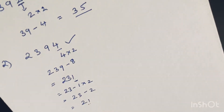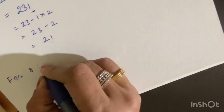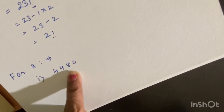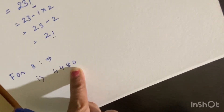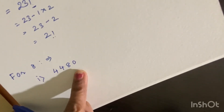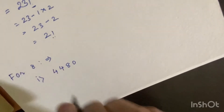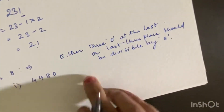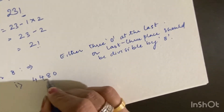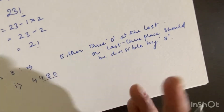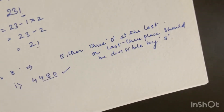Now let us move on to the divisibility test of 8. If you remember, 4 and 8 are quite similar. For 4, the last two digits must be divisible by 4 or be 00. For 8, the last three digits should be divisible by 8, or the last three digits should all be zeros. For example, if we look at a number ending in 480, the last three digits are 480 — and since 48 is divisible by 8, 480 is also divisible by 8, so the number is divisible by 8.